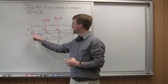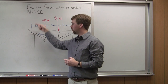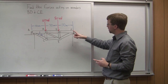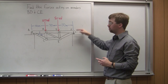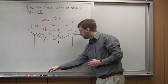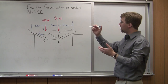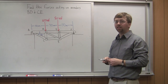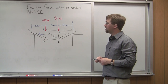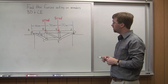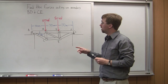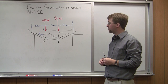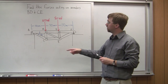The pin joint at A means it's not allowed to move left or right, or up and down. At the roller joint F, it is allowed to move left or right, but not up or down. Since we've got specific members to find, we're going to use the method of sections, which lets us jump straight to finding the forces for these members in the middle.